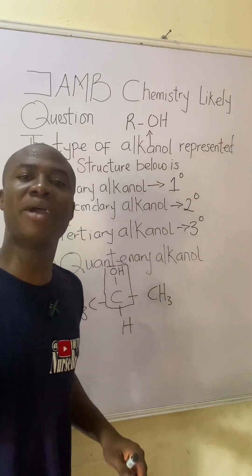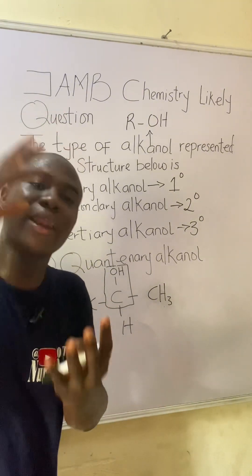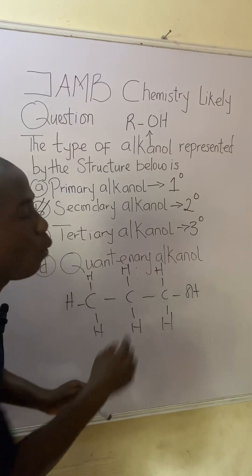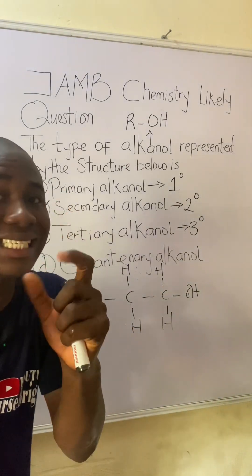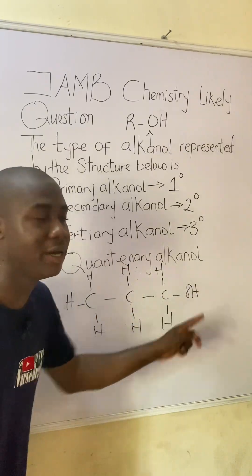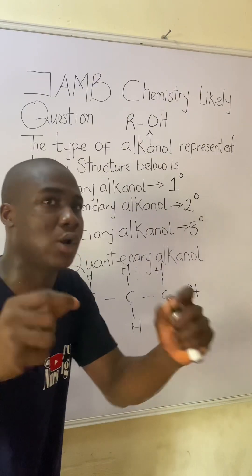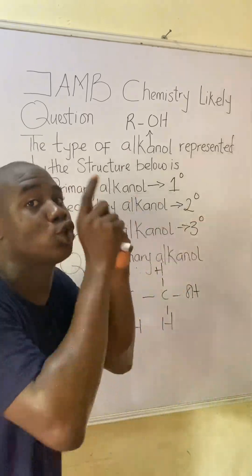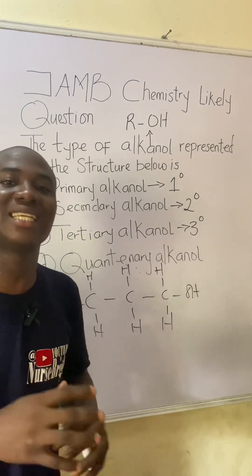If you find this video lesson helpful, click the subscribe button and share these lessons with your friends. Now here is your practice question: what type of alcanol is this? Remember — locate the hydroxyl group, find the carbon bearing it, and count how many carbons are directly attached to that carbon. Drop your answer in the comment section. Thanks for watching.